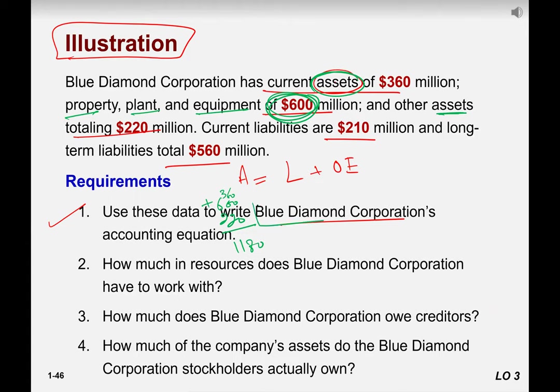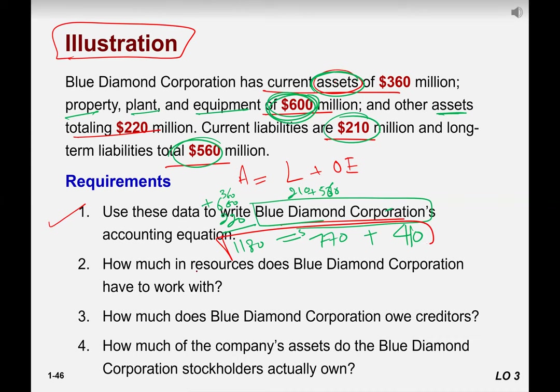1180 million dollars belong to Blue Diamond Corporation. And what are the liabilities? 560 plus the long-term liabilities. Yes, how much is that? 210 plus 560, 770 million. It will be 770 million. But they didn't mention owner's equity. Can you find out that? Yes, it's 410, right? Yeah, right. And now my question is what does this equation tell you? Let me just write it down here in a big clear way.